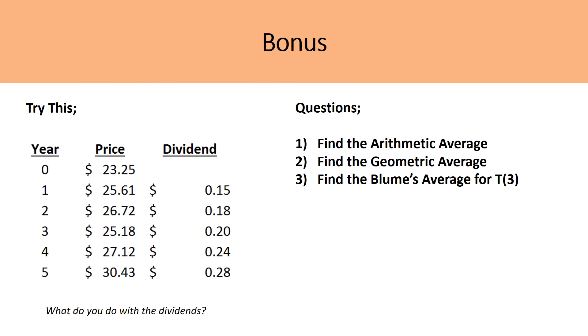So for a bonus question, which you can work on by yourself, instead of just being given the return values, you're going to consider a stock with a base year starting at $23.25. And over the five-year period, the stock changes yearly. And accounting for that dividend as well, you will calculate the individual returns. And then you will need to find the arithmetic, geometric, and the Blume's average for a forecast period of three.